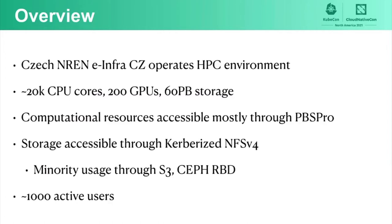Our Czech national research and education network is called AINFRA.cz and it operates an HPC environment. We have approximately 20,000 CPU cores, 200 GPUs, and 60 petabytes of storage. Computational resources are accessible mostly through the batch system PBS Pro, and storage resources are accessible through Kerberized NFS version 4. Storage can also be accessed by S3 or Ceph RBD, but only a minority of users choose this way.